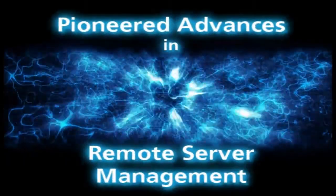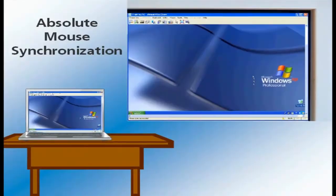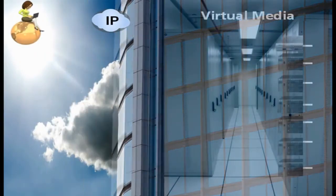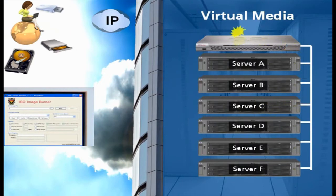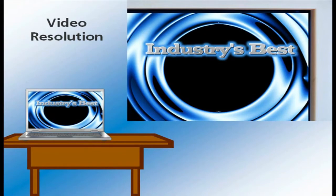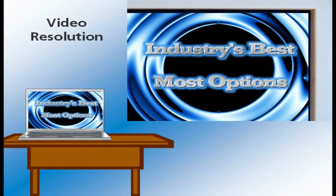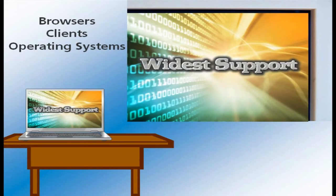Raritan has pioneered many advances in remote server management. Absolute mouse synchronization provides perfect mouse synchronization on Windows and Mac servers — no longer do you need to adjust mouse settings on target servers. Raritan offers virtual media with the most available features and options. Easily transfer files from your hard drive, internal or external CD, USB drive, or even local or network-based ISO files. Raritan also leads with the industry's best video resolution and most video resolution options, with support provided for the widest range of browsers, clients, and operating systems.